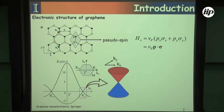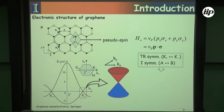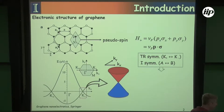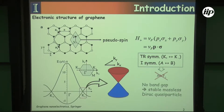If we combine time reversal invariance and particle-hole symmetry together, then we can't open a gap, because there's no way we can add an m-sigma-z term. If we had either one of these two symmetries alone, we could add an m-sigma-z term, but the combination of these two forbids it. So there's no band gap that opens, and we have a stable Dirac point.